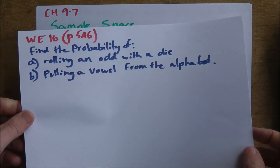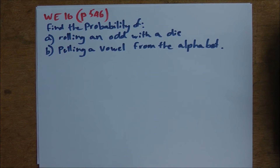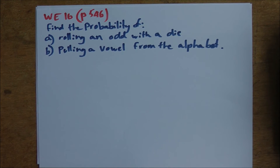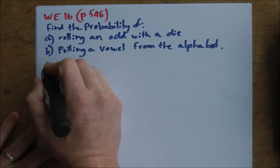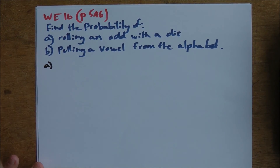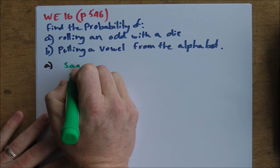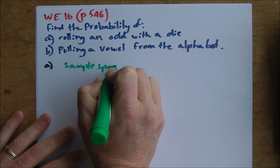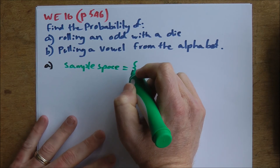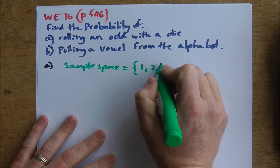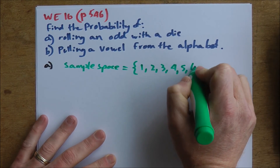Let's look at worked example 16. The question says: find the probability of A) rolling an odd number with a normal die, and B) selecting a vowel (A, E, I, O, or U) from a bag containing 26 identical pieces of paper each with a different letter of the alphabet. For part A, we can list out the sample space for a normal die: 1, 2, 3, 4, 5, 6.